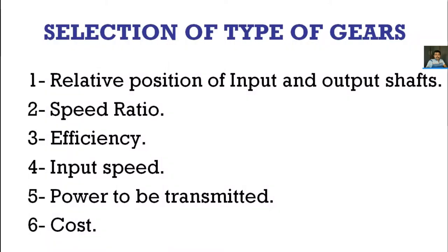The second factor is the amount of speed reduction required — the velocity ratio or speed ratio required. If it is a high speed ratio or higher velocity ratio, we go for one type of gear drive. If you want a low speed reduction ratio but with higher precision and accuracy, then you can go for another variety of gears. Based on the speed reduction and velocity ratio required, you can select the suitable type of gear drive.